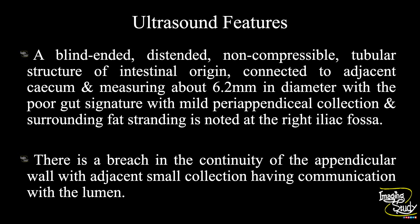In summary, a blind and distended non-compressible tubular structure of intestinal origin, connected to the adjacent cecum and measuring about 6.2 millimeters in diameter, with poor gut signature, mild peri-appendiceal collection, and surrounding fat stranding is noted at the right iliac fossa. There is a breach in continuity of the appendicular wall with an adjacent small collection having communication with the lumen.